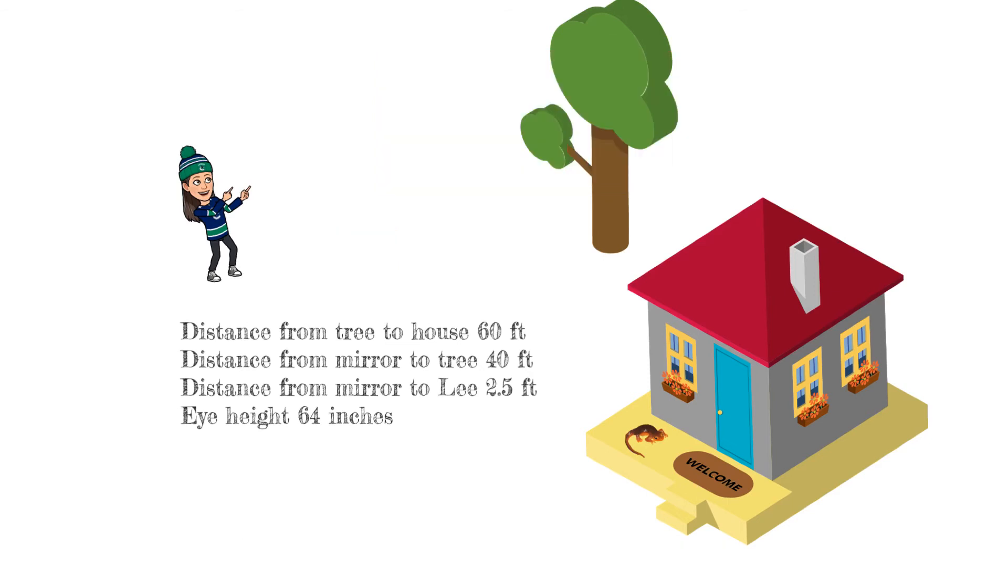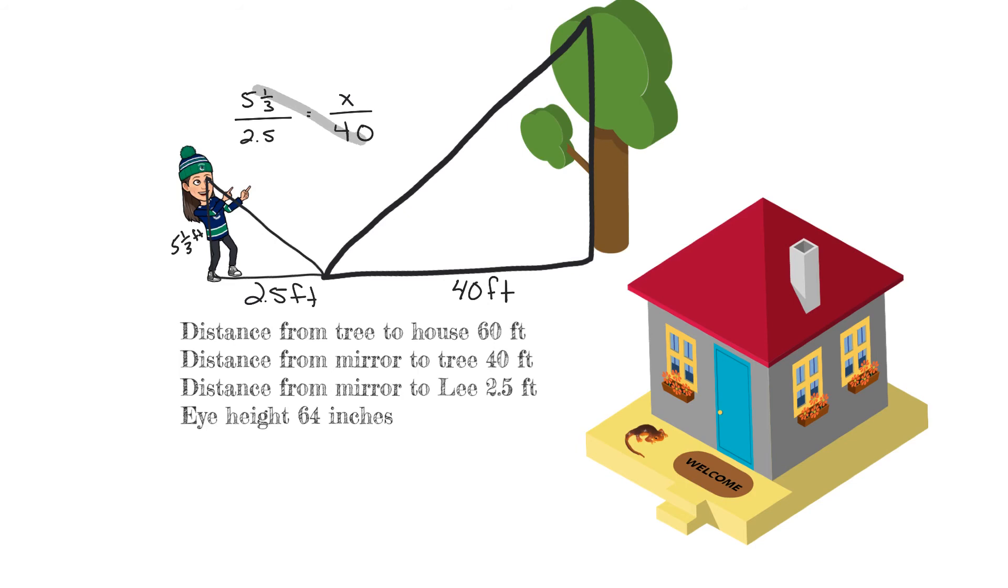So here's the answer to my quandary. First off, set up similar triangles with the mirror in the middle. The distance from the mirror to the tree is 40. Distance from the mirror to me is 2.5 and my eye height is 64 inches. So I need to turn that into feet by dividing by 12. So I get 5 and 1/3 feet. So now I'm going to set up the proportion. 5 and 1/3 over 2.5 equals x over 40. Solving the proportion gives me 85 and 1/3 feet.